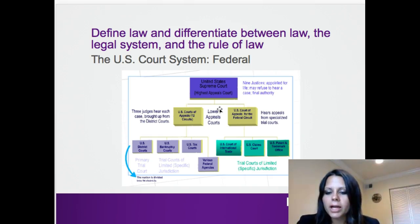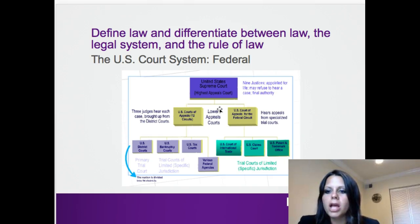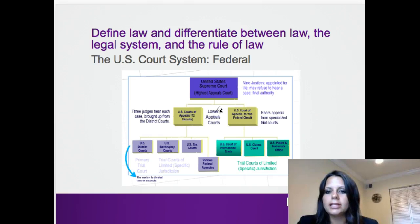Keep in mind not all cases are heard at the US Supreme Court level. The US Supreme Court has nine justices appointed for life, and they can actually refuse to hear a case — they create the final authority. They may choose not to hear a case when a writ of certiorari is put forward. Of the thousands of cases put forward, they may only hear about 100 each year, choosing only those that are most significant and need this type of final authority.